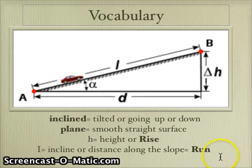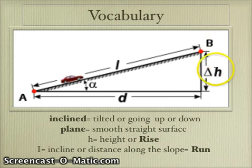So the car is going up an inclined plane. A plane means a smooth, straight surface. The rise just means the height here.